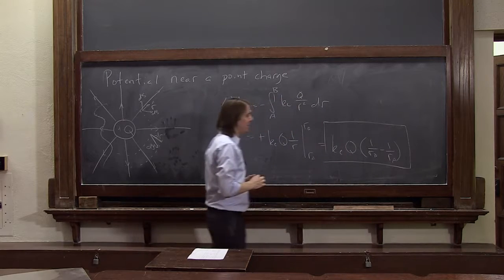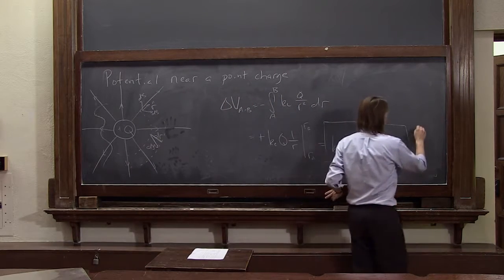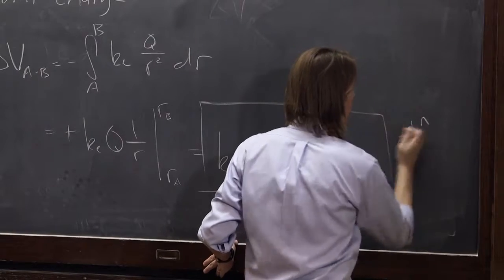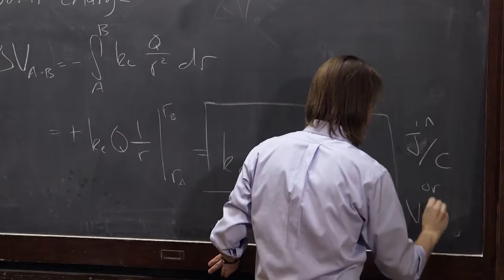The unit you might think of it being in is what? Is energy per coulomb, right? So you might think of it as joule. Energy is in joules per coulomb, or we also call that a volt.